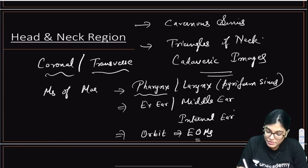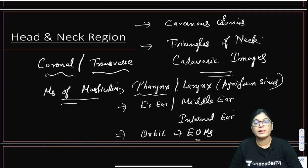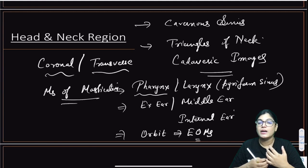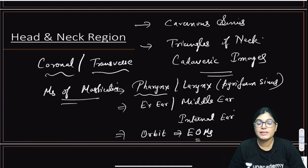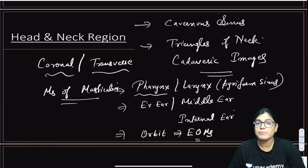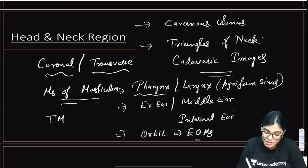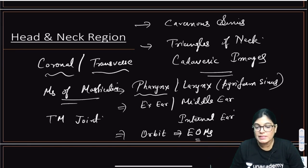For head and neck sections, you must see the coronal and transverse sections and identify structures. Muscles of mastication are very important — you need to know their insertions relative to the mandible, whether on the outer or inner aspect or on the coronoid process. This helps identify structures in cross-sections. Practice identification of structures in head and neck in sagittal, coronal, and transverse sections. TMJ and the action of muscles on the TMJ are also important.